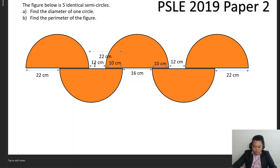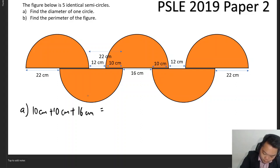The diameter of the circle will be very easily found from here. It would simply be 10 cm plus 10 cm plus 10 cm plus 16 cm to give you 36 cm. Show your working on how you got the 10 cm. We take 22 cm minus 12 cm to give us 10 cm first.